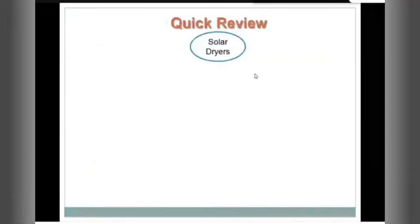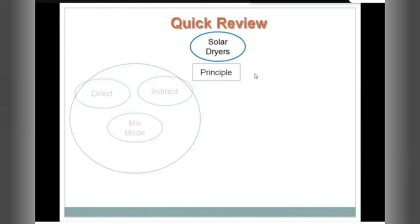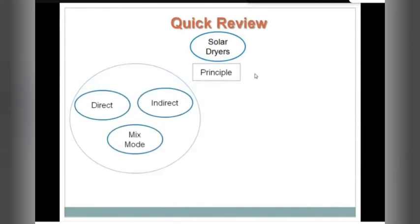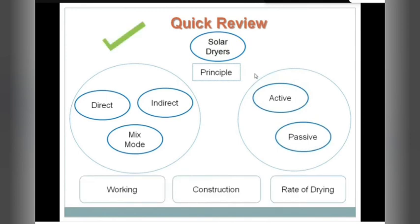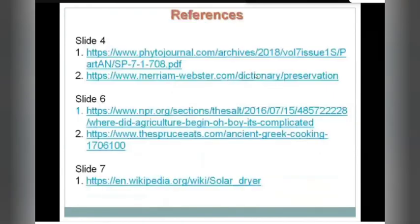Let's have a quick review of what we covered. Our topic was solar dryers. We did its principle, the three types on the basis of construction — direct, indirect, and mixed mode — and on the basis of wind movement — active and passive. We covered their construction, working, rate of drying, advantages, disadvantages, costs, and some specific technical terms.